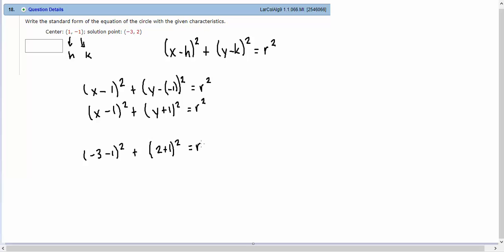equals r squared. So negative 3 minus 1 is negative 4, squared. 2 plus 1 is 3, squared equals r squared.